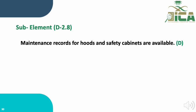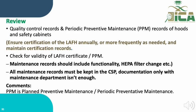Sub-element D.2.8 states that maintenance records for the hoods and safety cabinets are available, and this sub-element is evaluated through document review. We review quality control records and periodic preventive maintenance (PPM) records of the hoods and safety cabinets to ensure certifications are applied annually or more frequently as needed. We also review the validity of certificates and all maintenance records stored in this area, and scoring is given based on the document review findings.